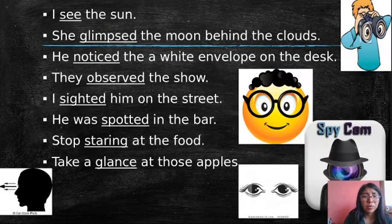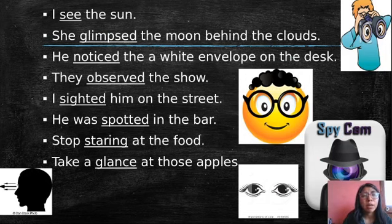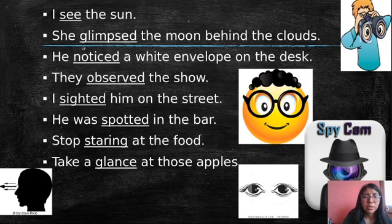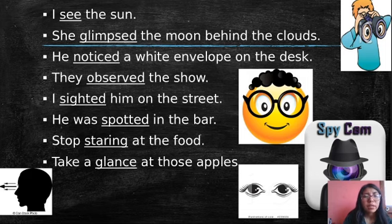Here I have some examples: 'I see the sun.' 'She glimpsed the moon behind the clouds.' That is the same as 'see.' 'He noticed a white envelope on the desk.' 'They observe the snow.' 'I spotted him on the street.' 'He was spotted in the bar.' 'Stop staring at the food.' 'Take a glance at those apples.' So as you notice, I am using the word 'see' with its synonyms.